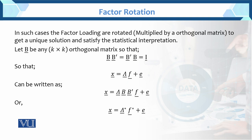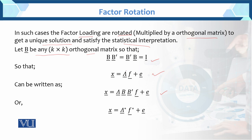Lambda_11 की value greater than 1 थी, तो हमने उसको rotate करना है - यानि कोई transformation कर रहे हैं. Factor loadings are rotated - multiplied by an orthogonal matrix - to get a unique solution and satisfy the statistical interpretation. Principal components में भी ऐसे किया था - unique solution के लिए orthogonal transformations की थी. Let B be any k×k orthogonal matrix such that B times B prime equals B prime times B equals identity. So the model x equals lambda f plus e_i can be written with this transformation.